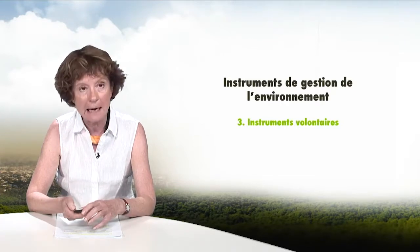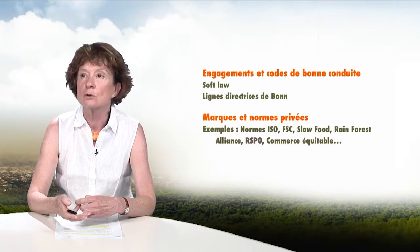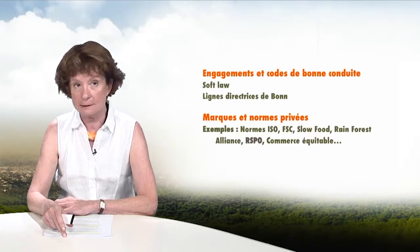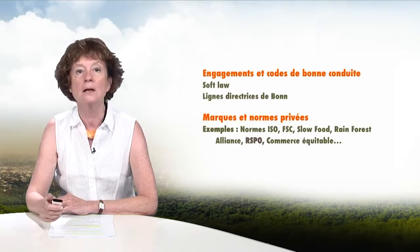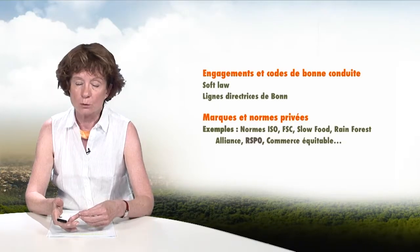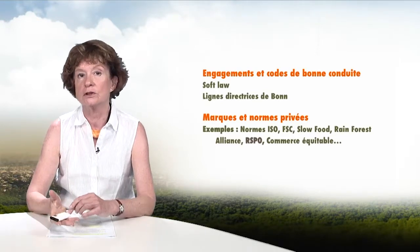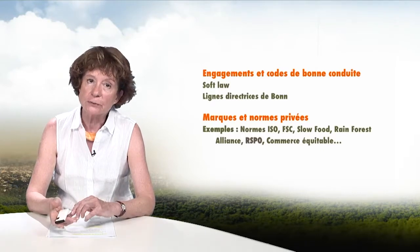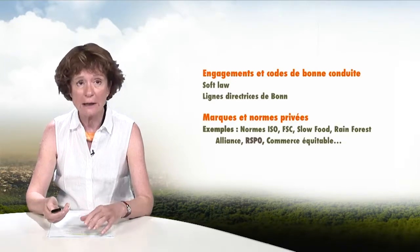A third set of instruments are voluntary instruments, where civil society initiatives are encouraged. These include commitments and codes of conduct — everything known as soft law that has no actual legal power, such as the Bonn Guidelines describing the exchange of genetic material — and also a large number of brands and private standards: ISO standards, the FSC (Forest Stewardship Council) for sustainable supply of wood, the Slow Food Movement, the RSPO certificate for sustainable palm oil, and all the fair trade labels.